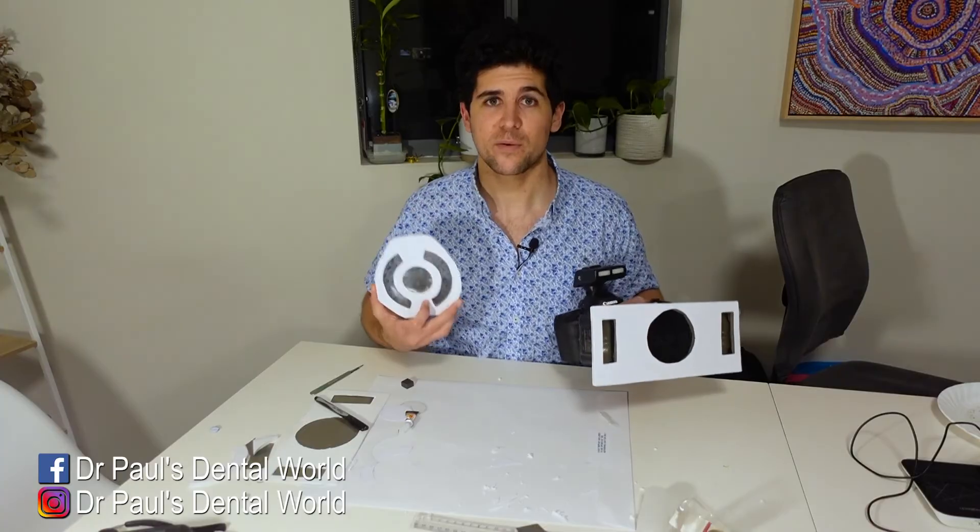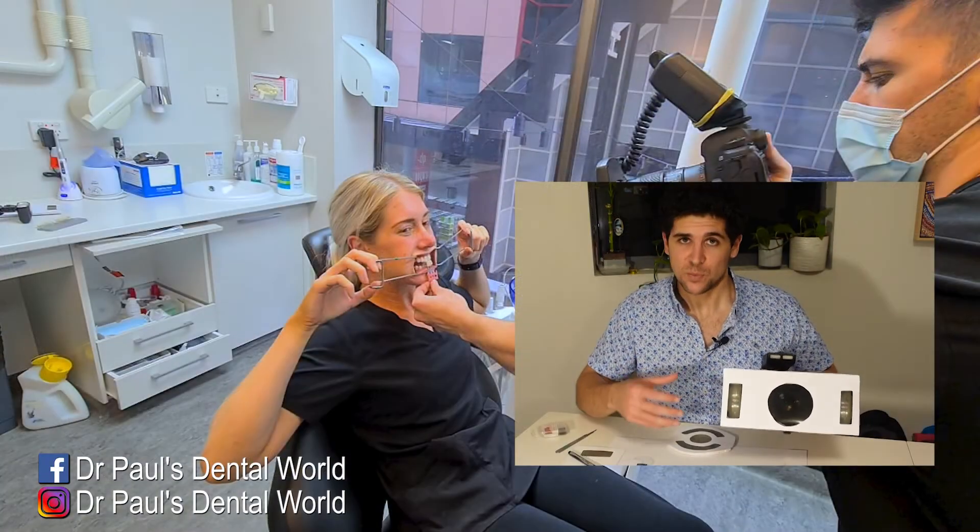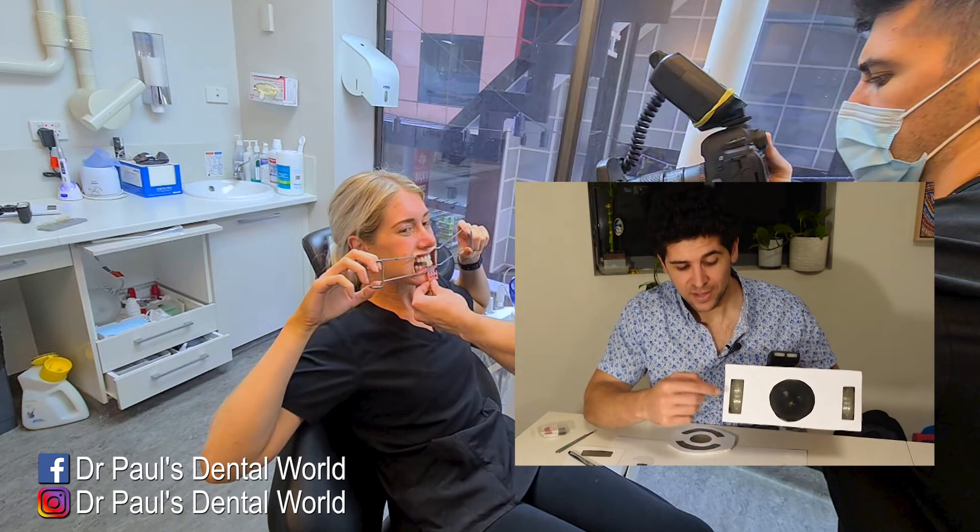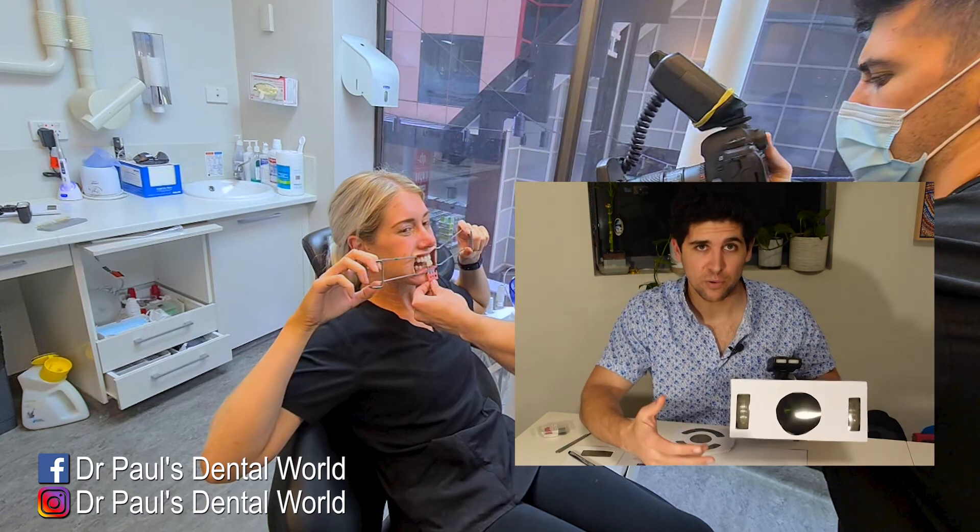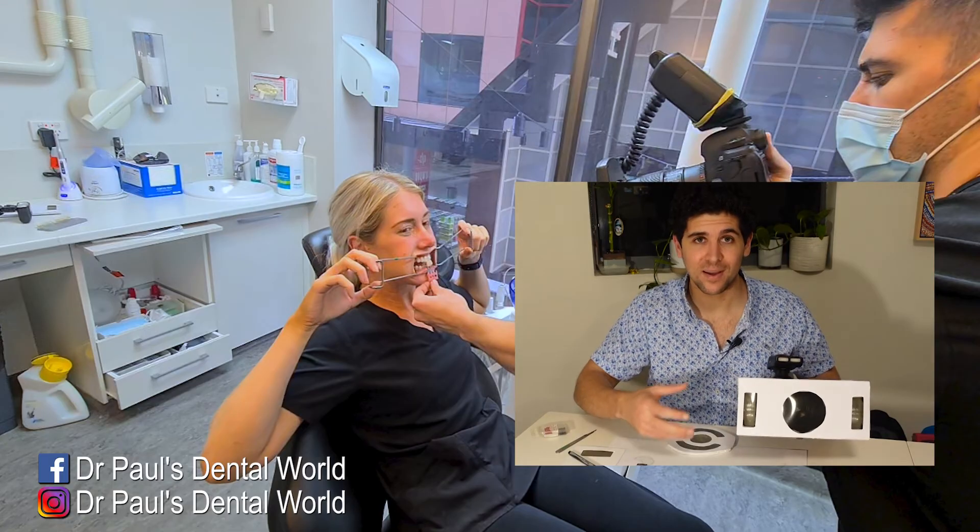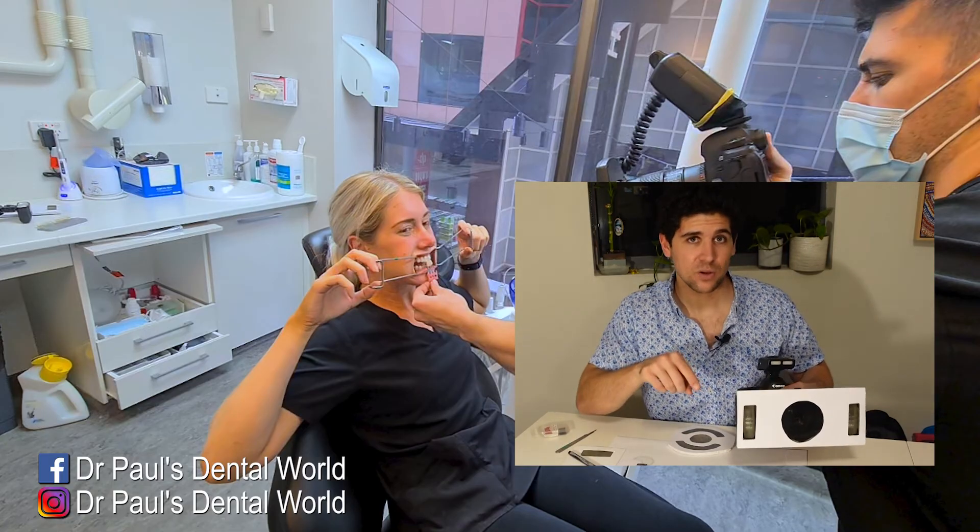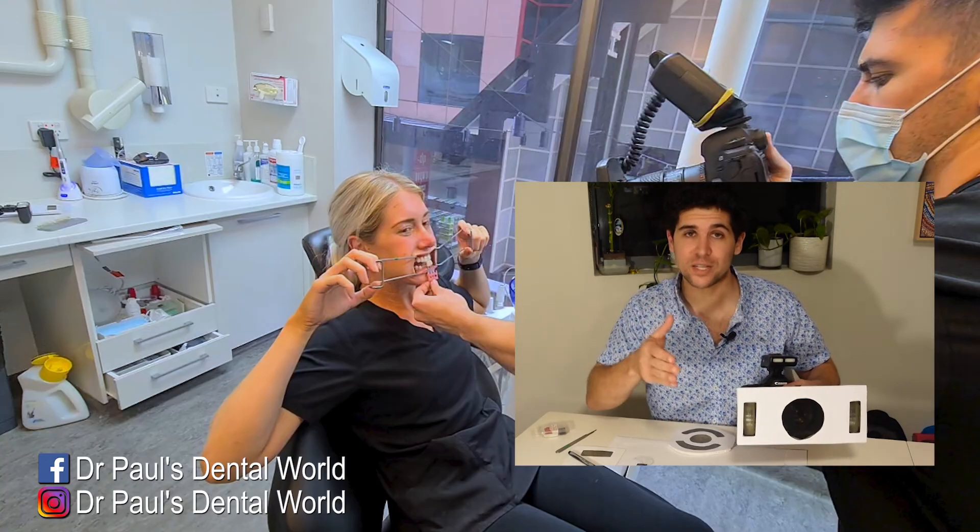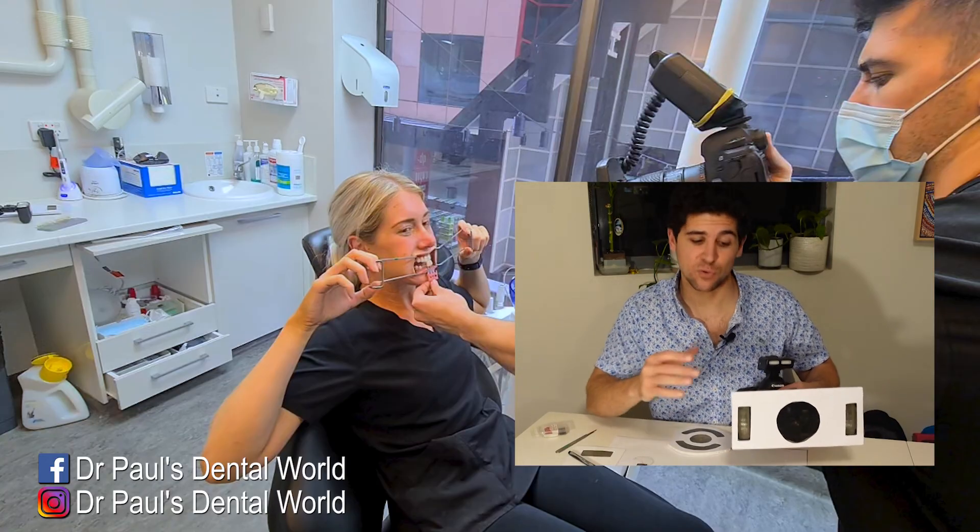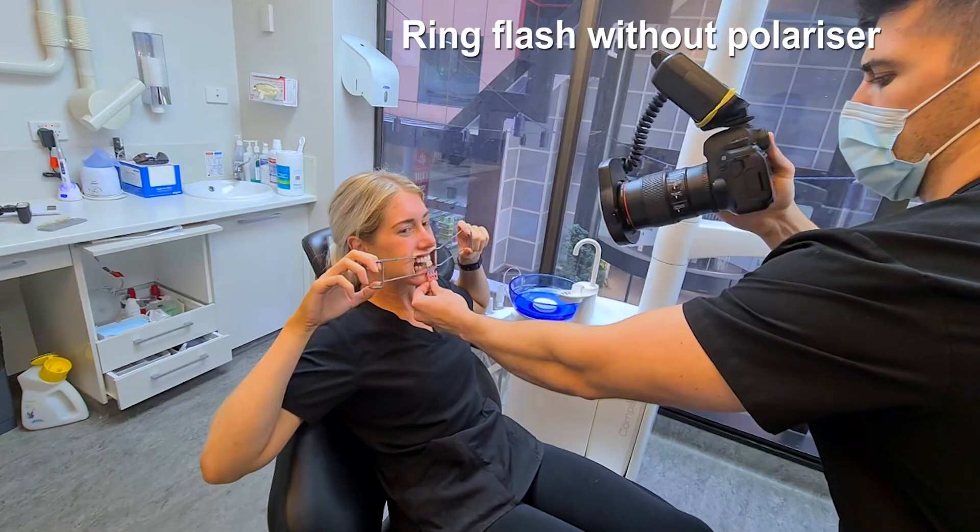I'm sure there are other ways but this is a very simple easy way of doing it. So now that we've made these let's test them out and see how they work. Now one thing worth mentioning is that when you have the polarizer on the flash has to now pass through the polarizer which means that the flash power needs to be increased when you actually take the image either that or increase your ISO or decrease your f-stop to adjust for having the polarizer in place.